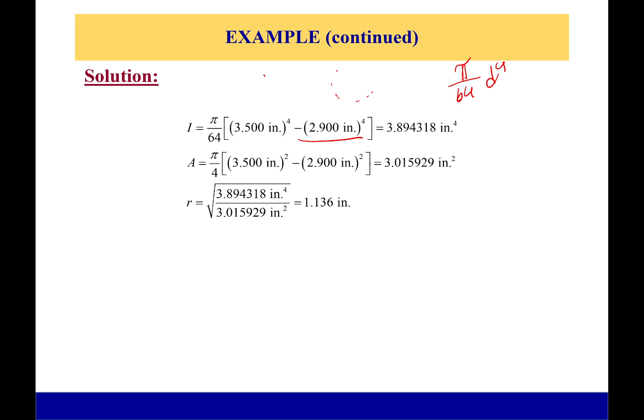Now we need to find the area. Why are we finding the area? Because remember, our slenderness ratio is L/r, and r squared is equal to I/A. So we have to find the area and the moment of inertia to be able to calculate this.